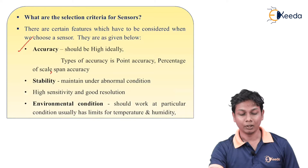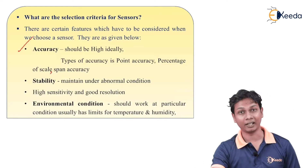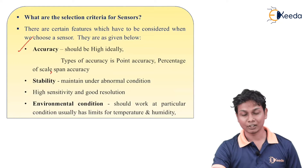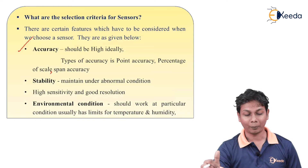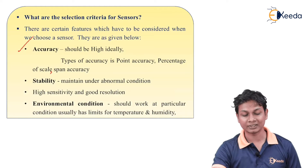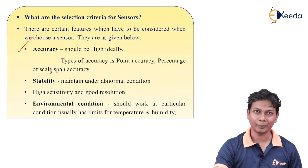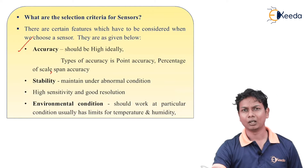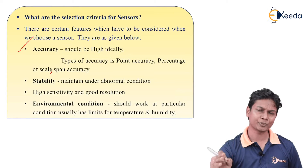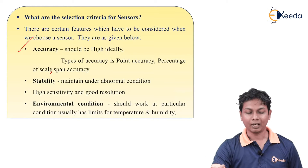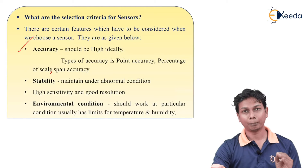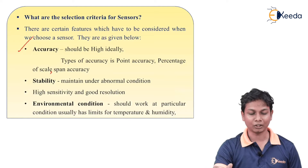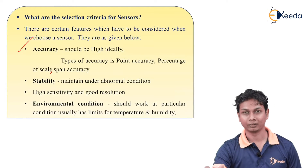Accuracy should ideally be high. The types of accuracy are: point accuracy, percentage of scale accuracy, and span accuracy. Under one particular condition, we consider that our accuracy should be absolutely accurate. It can be point accurate, scale accurate, or span accurate.